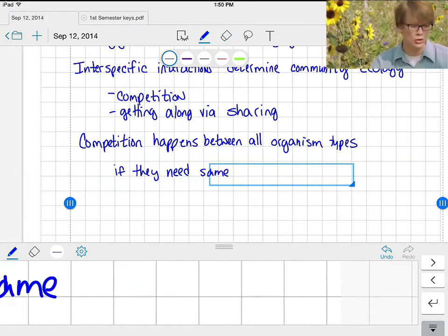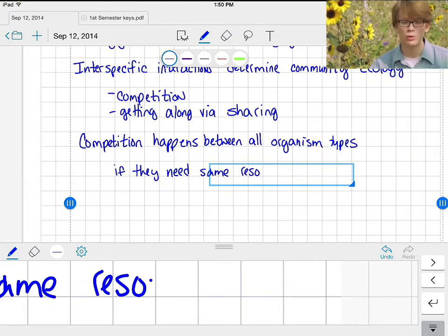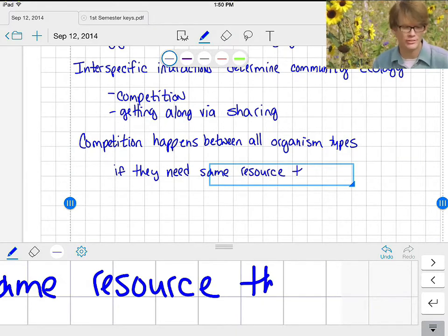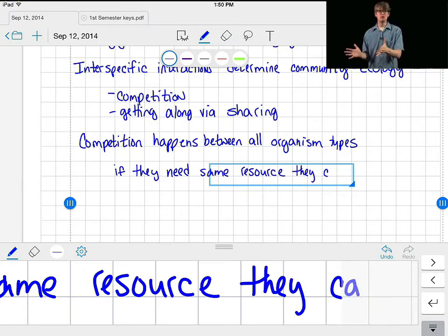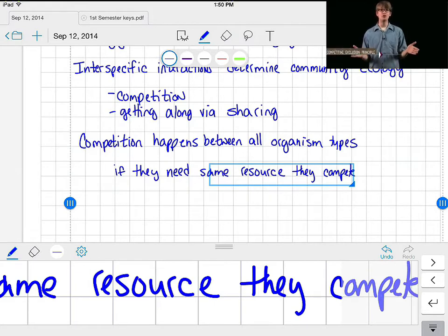Because the fact is, when two species are competing for the same resources, one of them is eventually going to be more successful and eliminate the other. This bitter truth is known as the competitive exclusion principle.